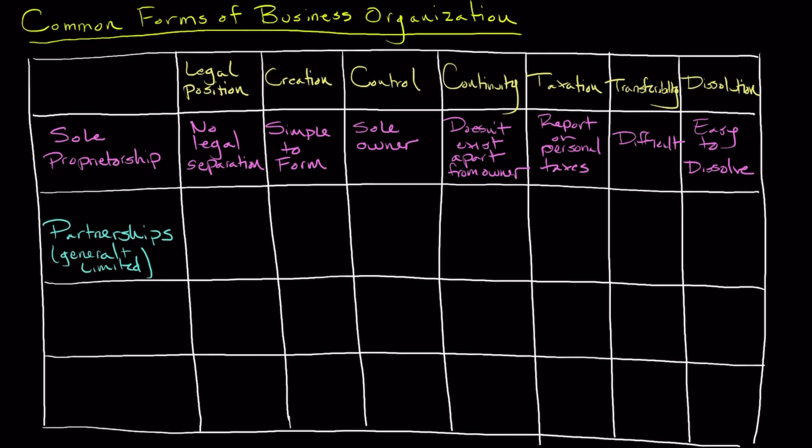With limited partnerships, they're a little bit different. In a limited partnership, we create two classifications of partners. There are still general partners who have the control and liability of the business, but they also introduce a second classification called limited partners, who are more like silent partners with limited liability. This means they are only liable for what they've invested and typically cannot be pursued personally for any actions related to the business.